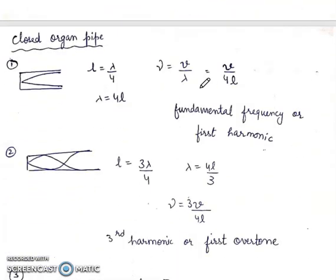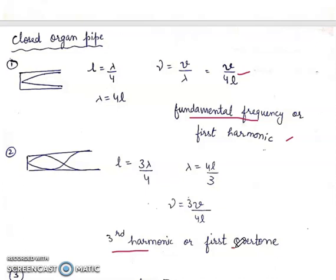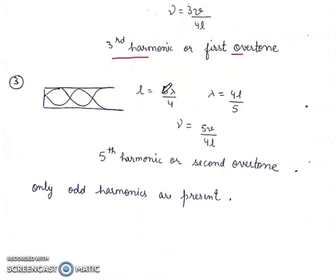Closed organ pipe is closed from one end. First harmonic: L = λ/4, λ = 4L, ν = V/4L. Third harmonic (first overtone): L = 3λ/4, λ = 4L/3, ν = 3V/4L. Fifth harmonic (second overtone): L = 5λ/4, λ = 4L/5, ν = 5V/4L. Only odd harmonics are present in a closed organ pipe.